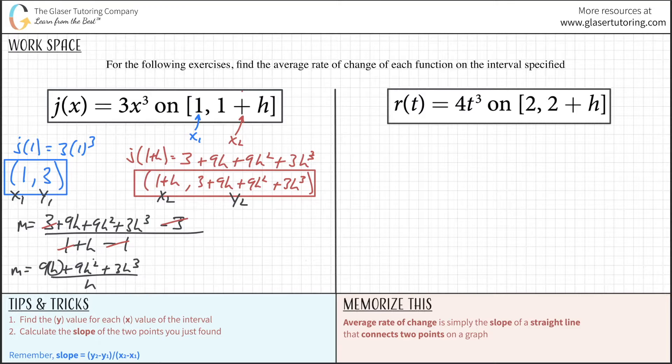Divide by x2 value of 1 plus h minus x1 value of 1. The ones cancel, threes cancel. We're left with (9h plus 9h squared plus 3h cubed) over h. Cancel one h from every term. The slope is 3h squared plus 9h plus 9.